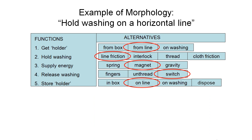Let's look at this option: getting the holder from the line, holding the washing using line friction, the energy supply coming from magnets, releasing the washing using a switch, and storing the holder on the line as well.